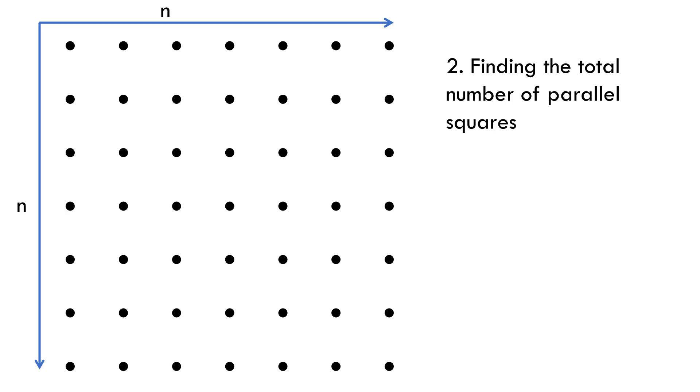So, how do we find out the number of these parallel squares in the drawing? Just to get some help with generalization, let's consider a 5x5 grid and try to see how many parallel squares with side 2 units can be formed.